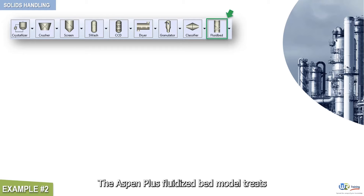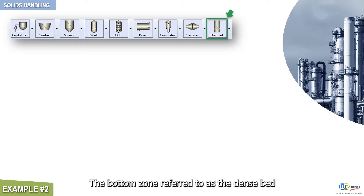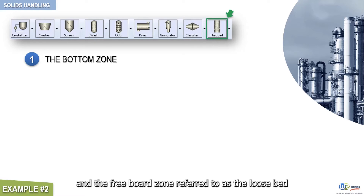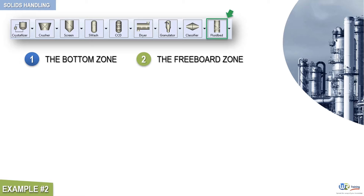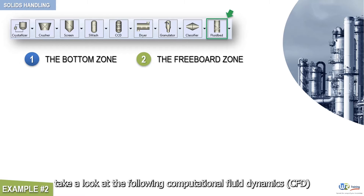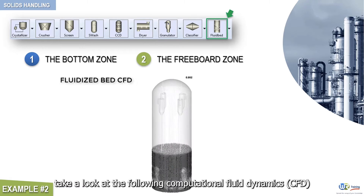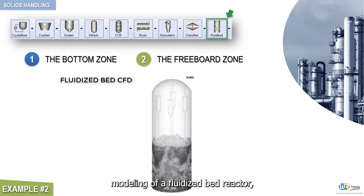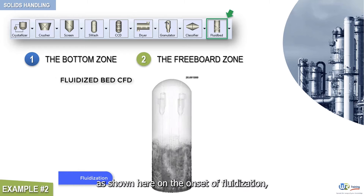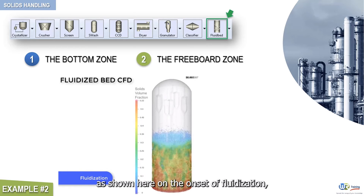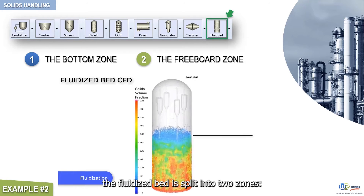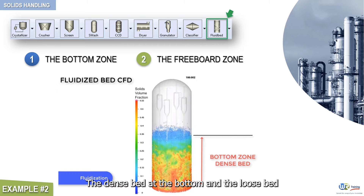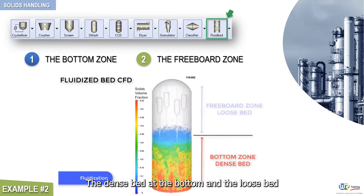The Aspen Plus fluidized bed model treats the bed as made of two zones: the bottom zone, referred to as the dense bed, and the freeboard zone, referred to as the loose bed. To better illustrate this concept, take a look at the following computational fluid dynamics modeling of a fluidized bed reactor. As shown here, on the onset of fluidization, the fluidized bed is split into two zones — the dense bed at the bottom and the loose bed.